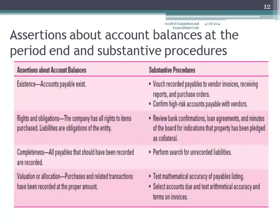Rights and obligations — the liabilities recorded on the books belong to the company. Look at bank confirmations. One of the things in the confirmations they'll ask about is any liabilities or outstanding lines of credit, things of that nature. Look at board of directors minutes, things like that. Perform a search for unrecorded liabilities — that's completeness, and we'll talk about that in a moment.